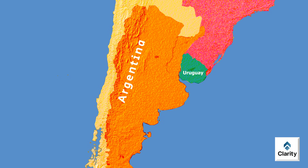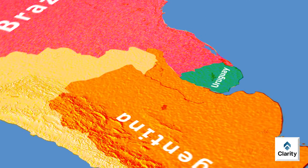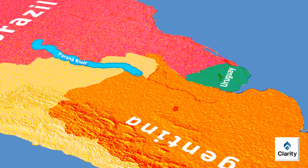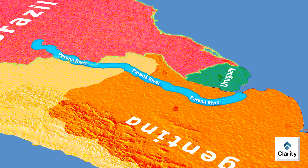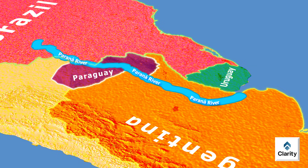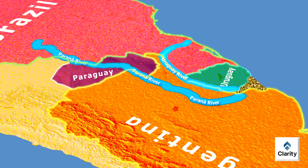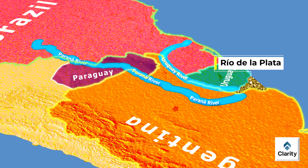Next we move to two important rivers of South America. The Parana River is one of South America's major rivers, flowing mainly through Brazil, Argentina and Paraguay. The Uruguay River is another significant river, flowing along the borders of Brazil, Argentina and Uruguay. Both these rivers eventually drain into a wide estuary called the Rio de la Plata.